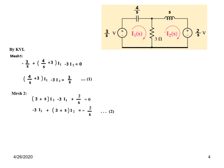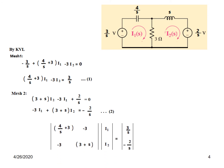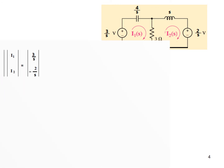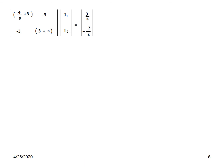Now we need to solve for I1 and I2. We write them in matrix form: the coefficient matrix has 4 over S plus 3 and minus 3 in the first row, and minus 3 and 3 plus S in the second row. The two currents and the two constants are 3 over S and minus 2 over S. This is the matrix equation.